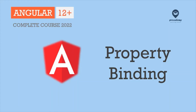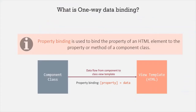In this lecture, you're going to learn what is Property Binding in Angular and how to use Property Binding to achieve data binding. Property Binding is used to bind the property of an HTML element to the property or method of a component class. We use Property Binding to achieve one-way data binding where the data flows from component class to view template.